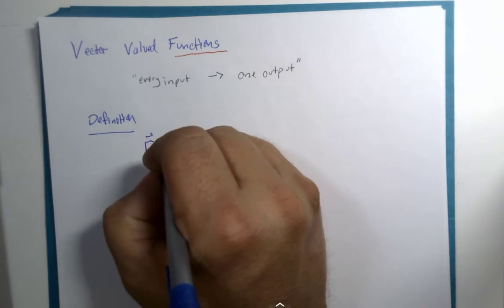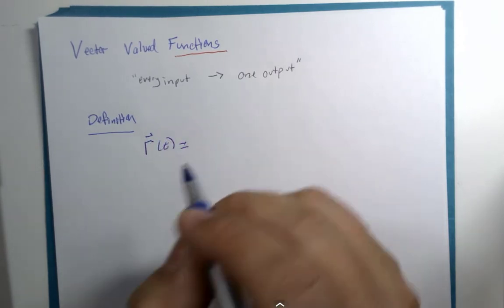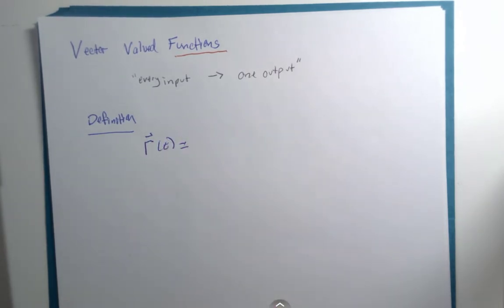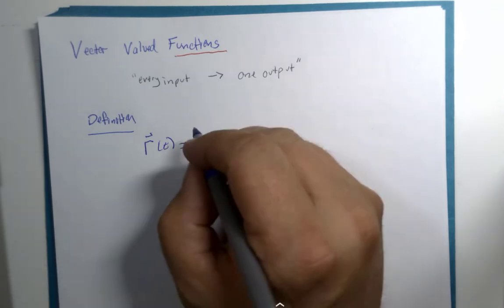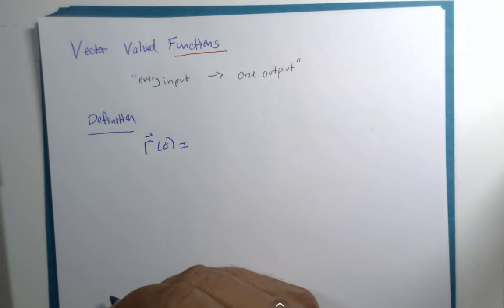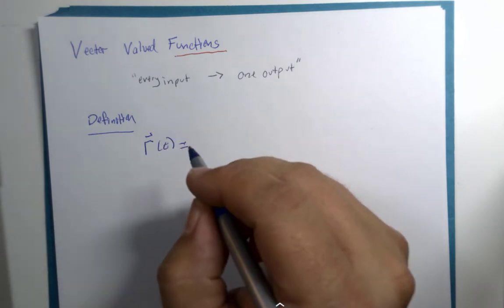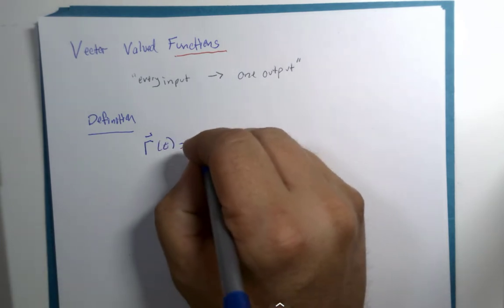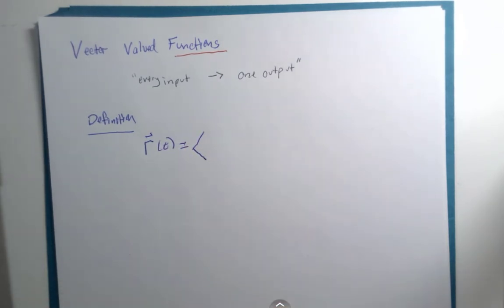For a definition: r of t, and I'm going to use the component form of the notation, but my students know that I accept linear algebra form and also the IJK form that many physics professors want them to use. This takes a little bit less space when I'm writing it.